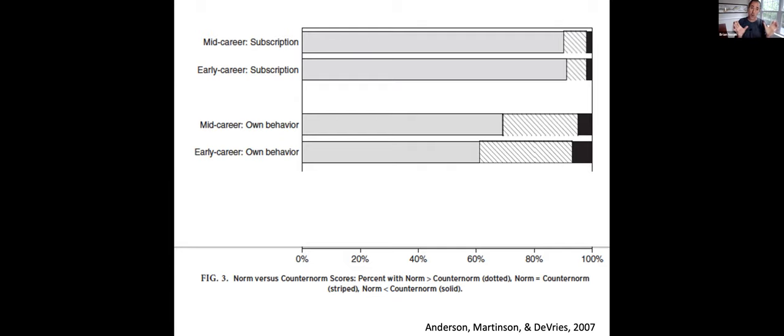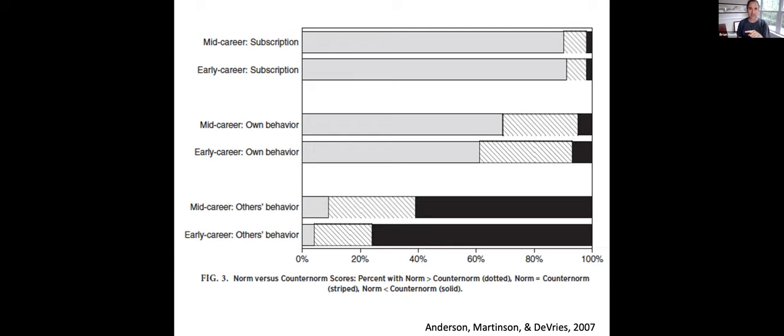So still most people are saying they behave according to the norms of science over the counter norms. But now a much more substantial group are saying that those counter norms also have weight in their behavior. And still very few say they behave according to the counter norms versus the norms. So then they said, okay, don't tell me what you do. Tell me what the other people in your field, what do they do?